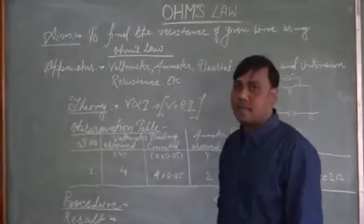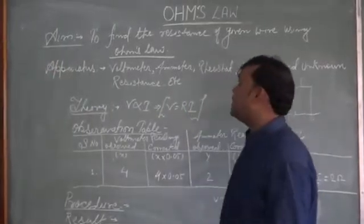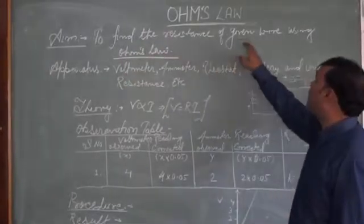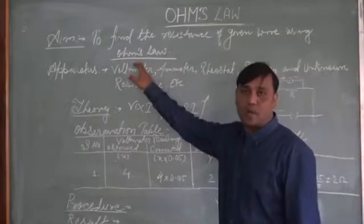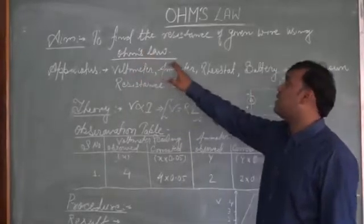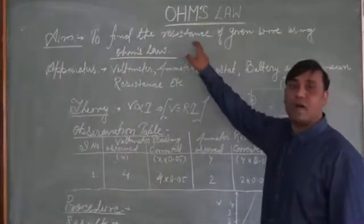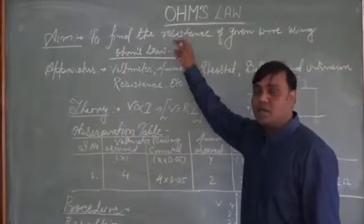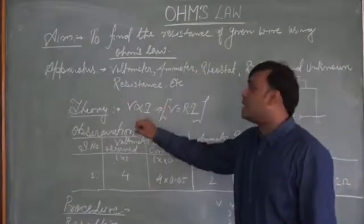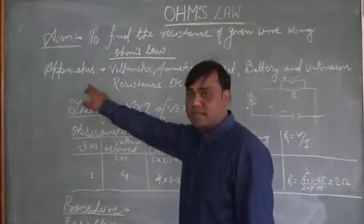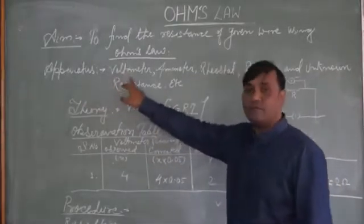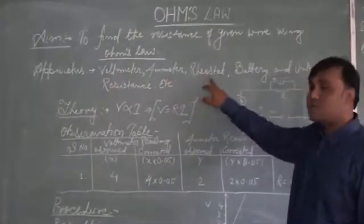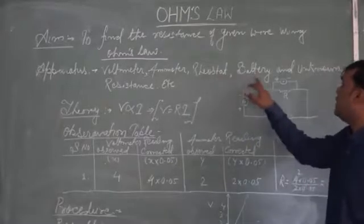First of all, we'll look at the aim of our experiment. The aim of this experiment is to find the resistance of a given wire using Ohm's law. The resistance of the wire is not given — we have to calculate it after performing the experiment. The apparatus required for this experiment are: voltmeter, ammeter, rheostat, battery, and unknown resistance.